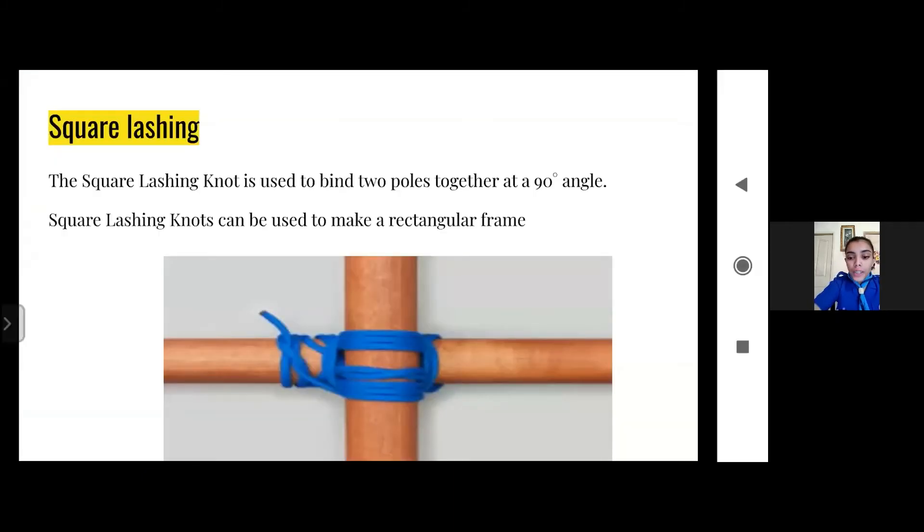So what is square lashing? Square lashing is basically used to bind two poles together at a 90 degree angle. Square lashing knots can also be used to make a rectangular frame. This lashing is designed to be load bearing and can be used to create scaffolding. Although the two poles usually cross each other at 90 degrees, the square lashing may be used when the angle between the two poles is as little as 45 degrees. Now let's see a video to see how this knot is made.